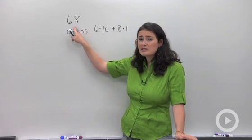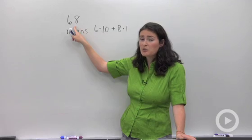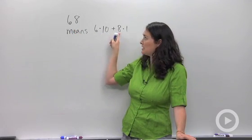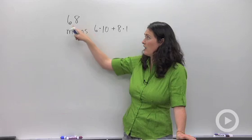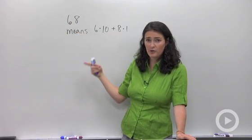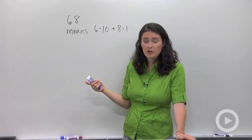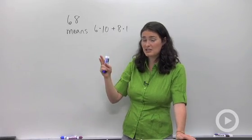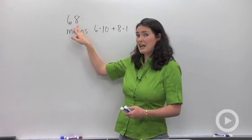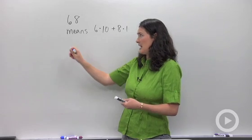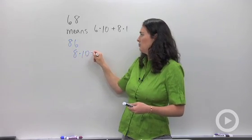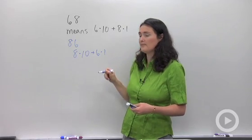Here's what I mean. The number 68 really means 6 times 10 — that's your tens digit — plus 8 times 1 — that's your ones digit. We call that the tens digit and the ones digit for a reason. That's going to become really important when you're switching the digits. For example, if I were to take 68 and switch the digits to get 86, that would be 8 times 10 plus 6 times 1.